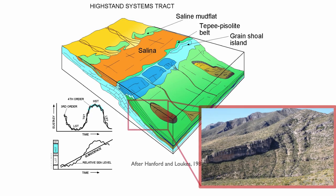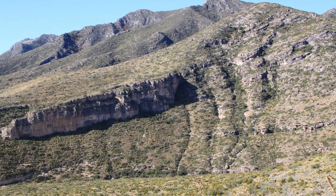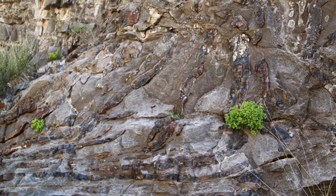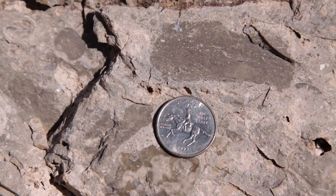Now we can look at what happens on the slope of this system during the highstand. We have beautiful geometries preserved — the carbonates of the highstand are mixed with the clastics of the lowstand, and the angle of the slope is preserved. Looking closely at this slope, you can find evidence of slumping, highlighted by silica preservation. We can also see evidence for transported larger grains — mass transport deposits, turbidites, etc.